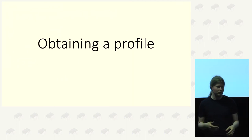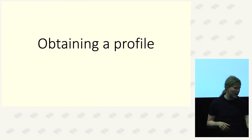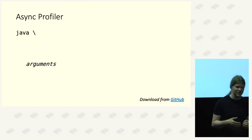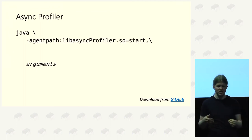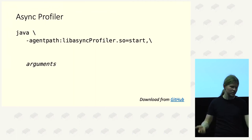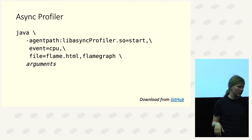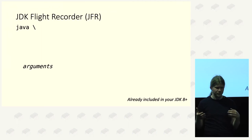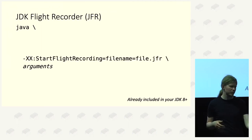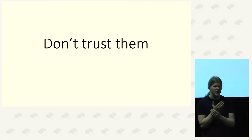So how do you obtain a profile? Just attach it — it's just a Java agent, or a native agent. You can just tell the JVM: -agentpath, please start it, and please also print the flame graph. With JDK Flight Recorder that's not dissimilar — it's built in so we can just tell the JVM to do it. But should you trust them? That's probably the reason you came here. And I think: no.